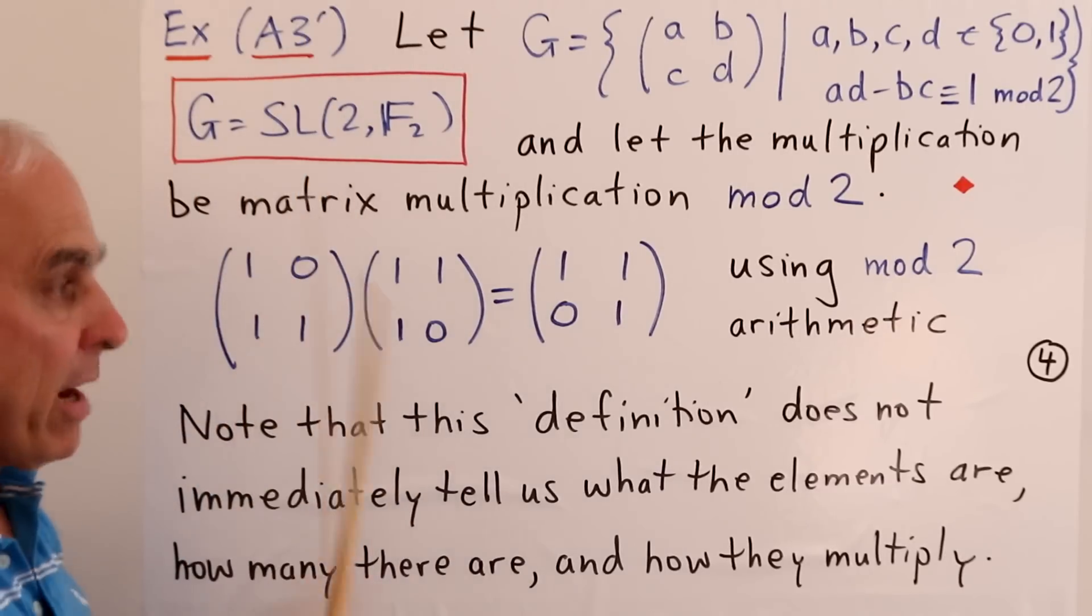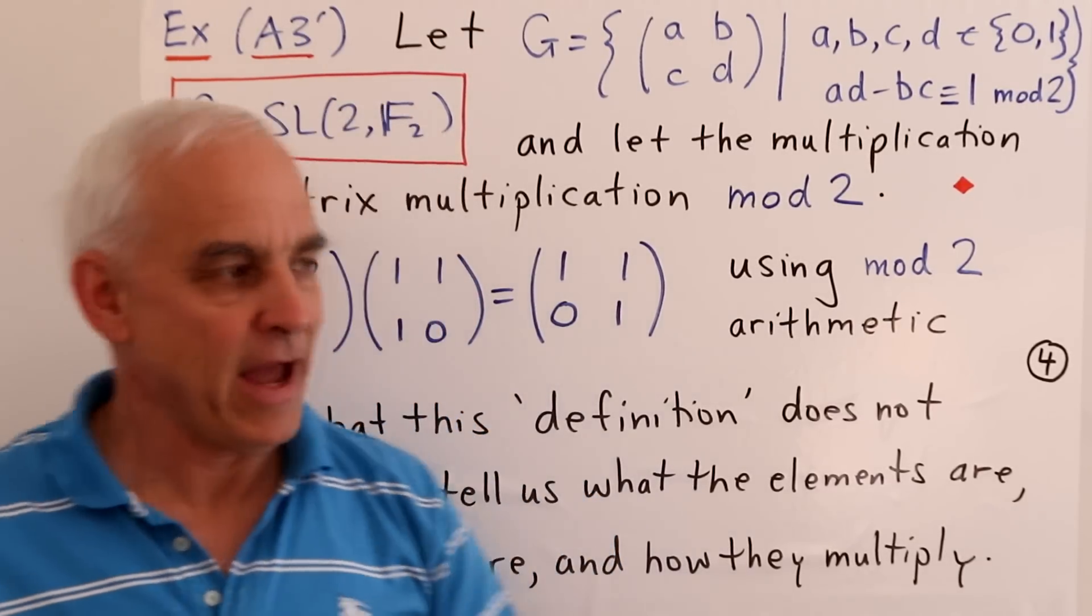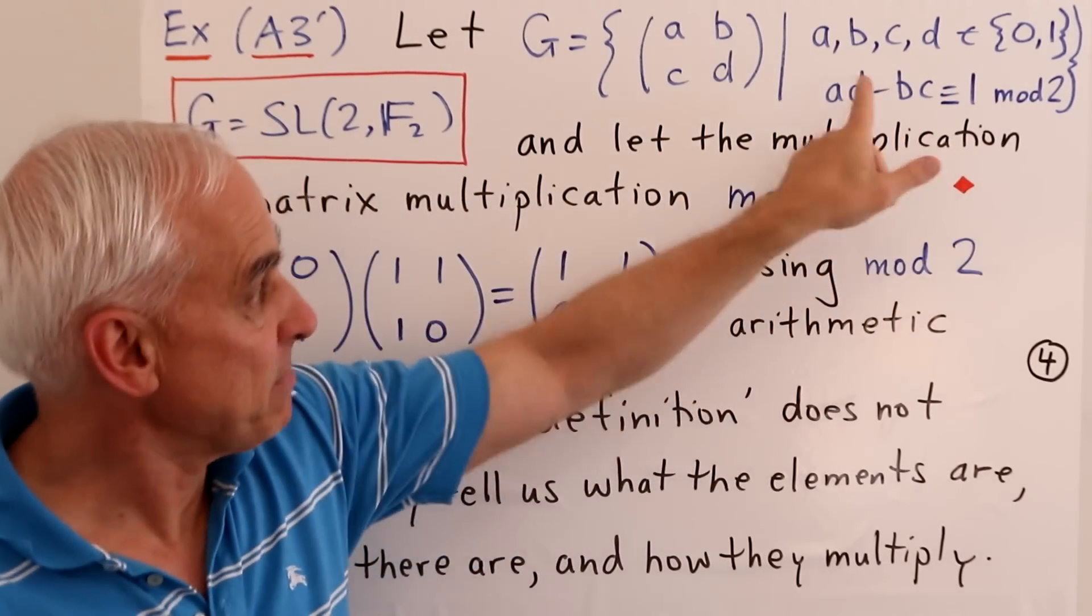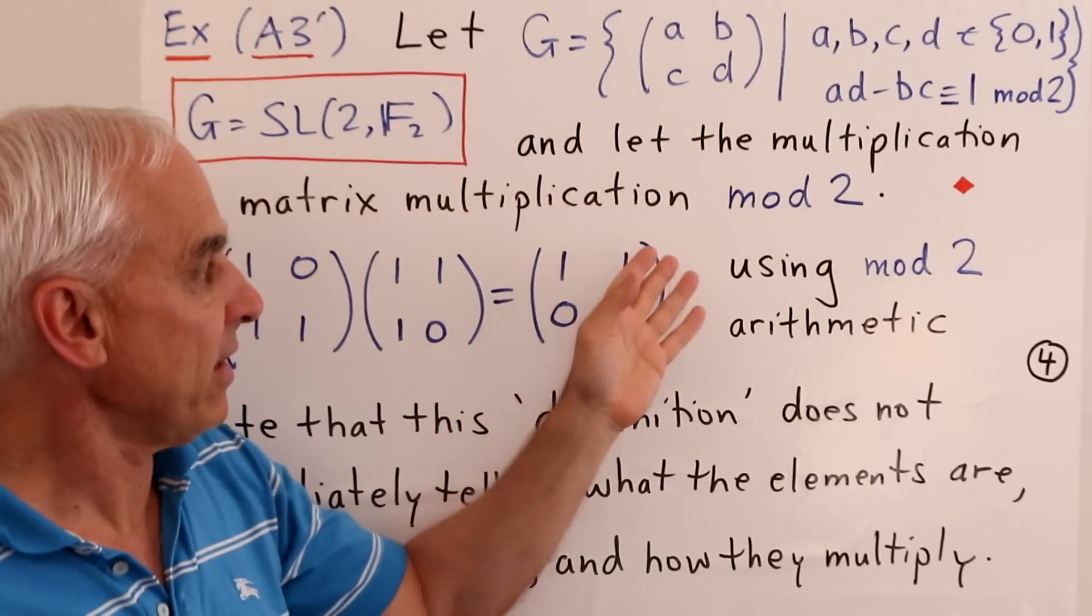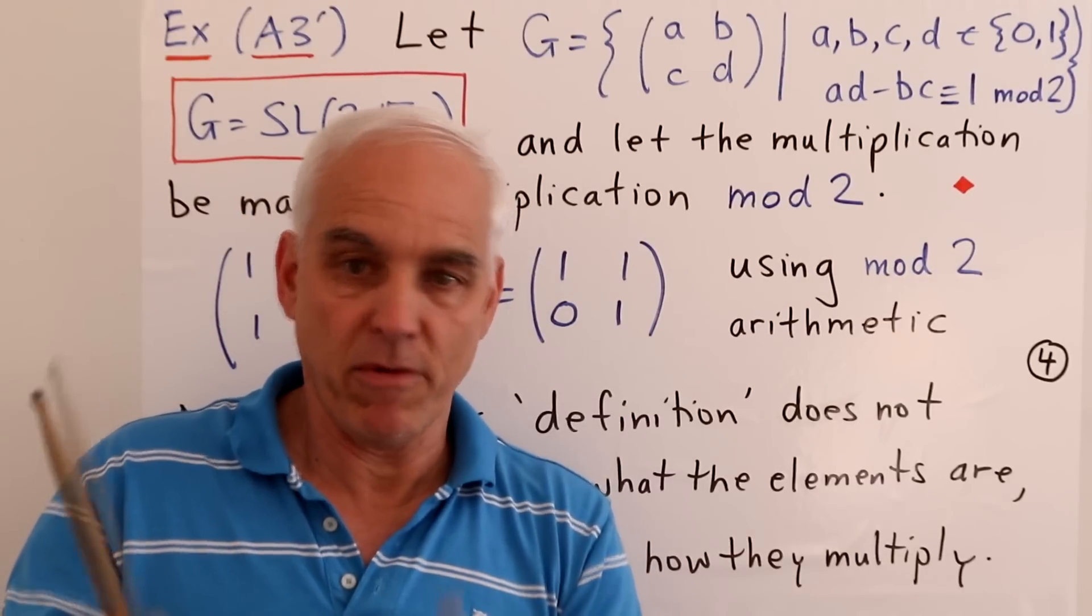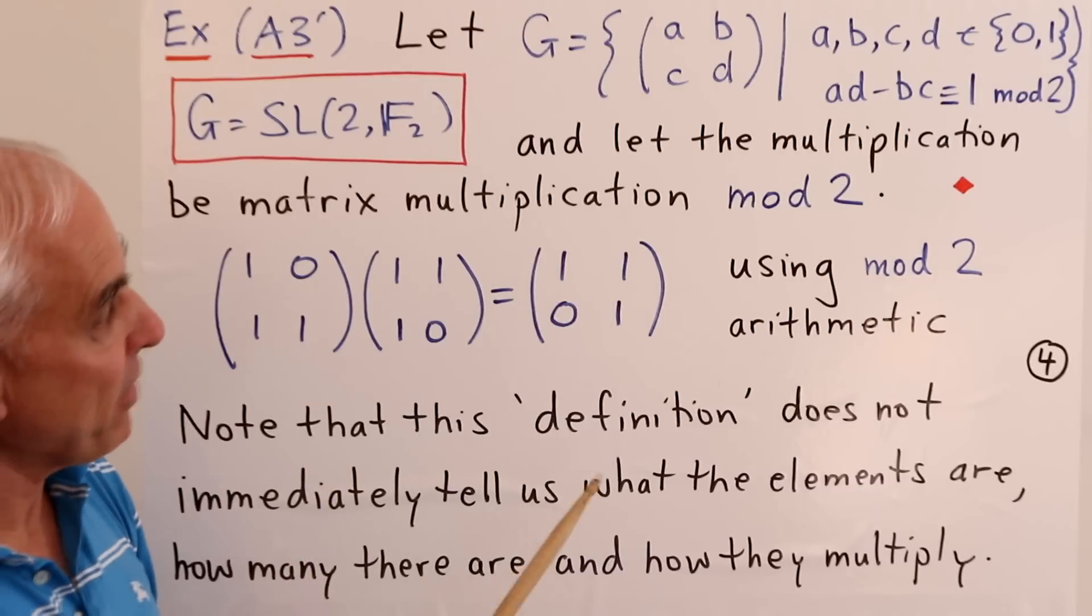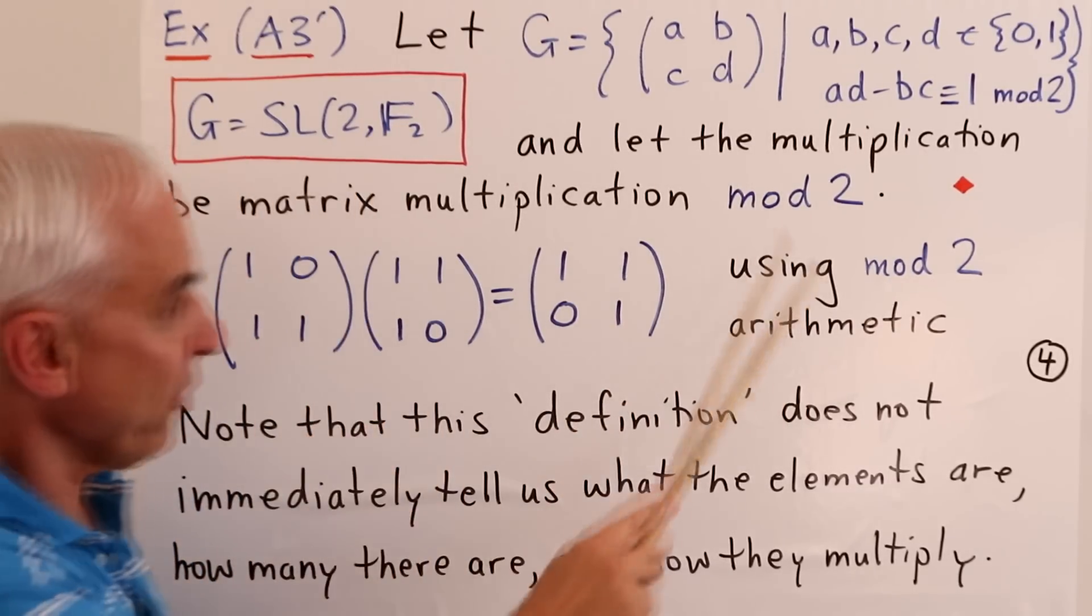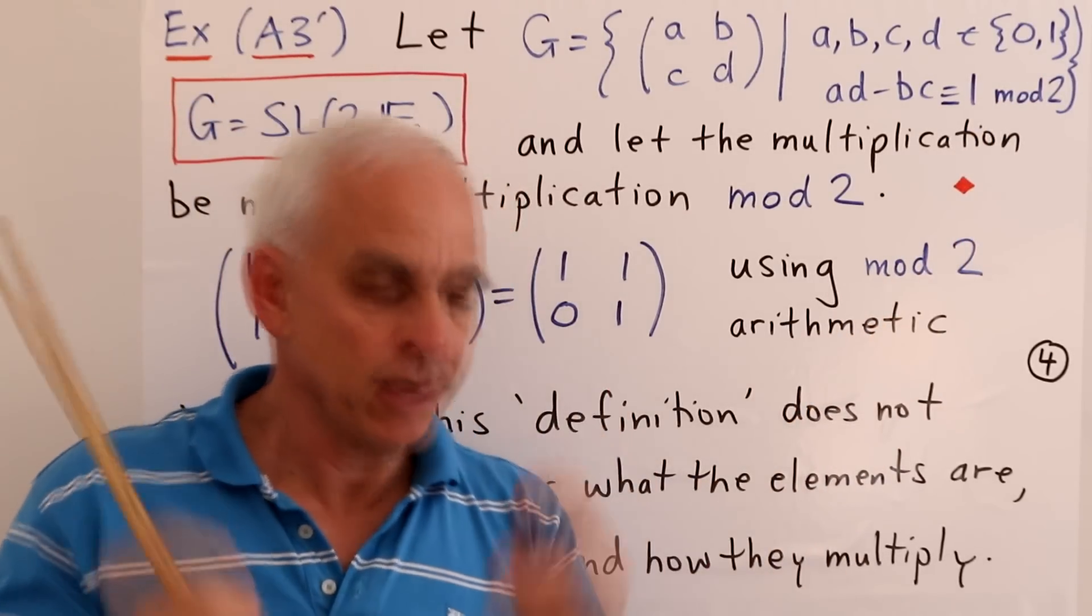So this is definitely an A3 prime type of definition, in that we are using descriptive language to specify the set. And also, we're basically talking about what the multiplication is, instead of laying it out in the form of an array. By the way, the name for this group is traditionally SL2F2. The F2 referring to the fact that we are basically working in a field with two elements.